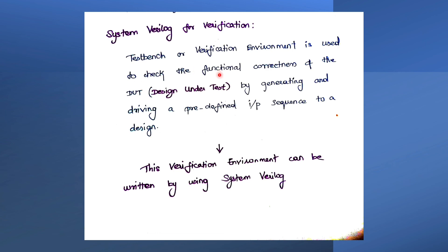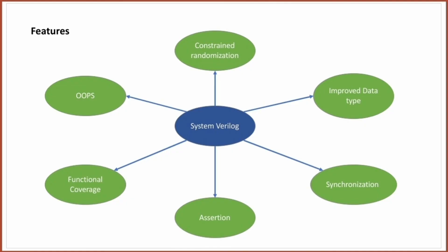For verification, we use the SystemVerilog concept. To verify a particular IP or design, we need a test bench architecture. We use SystemVerilog to build this test bench architecture, connecting the design with the test bench to find the correctness of the functionality. This verification environment is written using SystemVerilog. SystemVerilog features include constrained randomization, functional coverage, assertion, synchronization, and improved data types — all of which we will cover in detail in upcoming sessions.